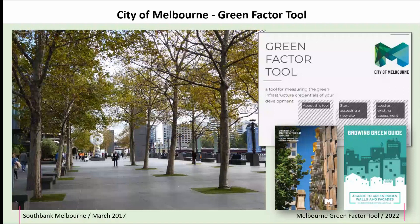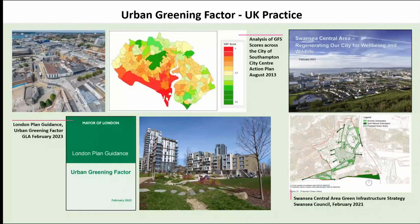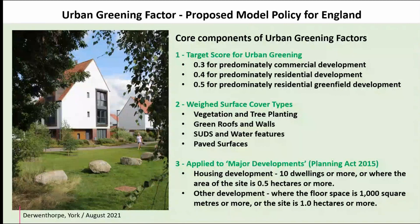Switching to the UK, we can see the early examples. Lindsay and Sam will talk about Southampton, top left, and the work from London and the GLA. There's also an example of how Swansea used a green infrastructure strategy as the vehicle for developing a green space factor. Moving to the component parts of the urban greening factor, the model policy Natural England launched has three key components: a target score for urban greening, weighted surface cover types, and where you apply the policy.